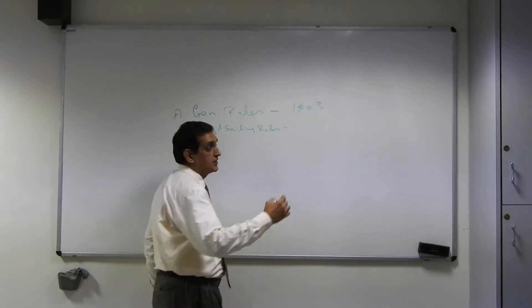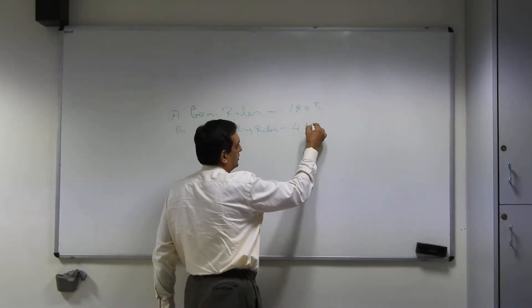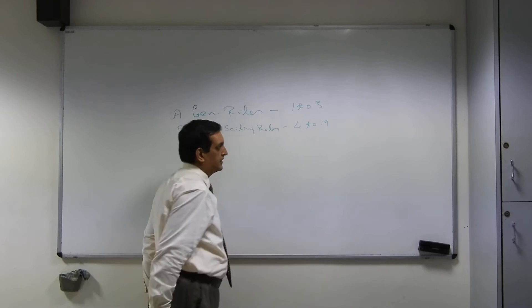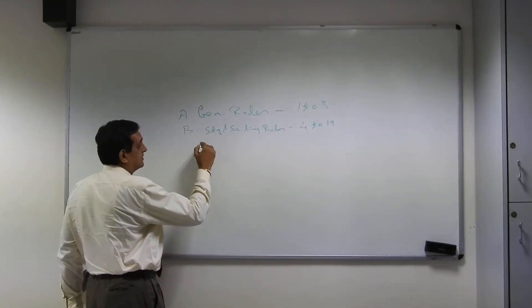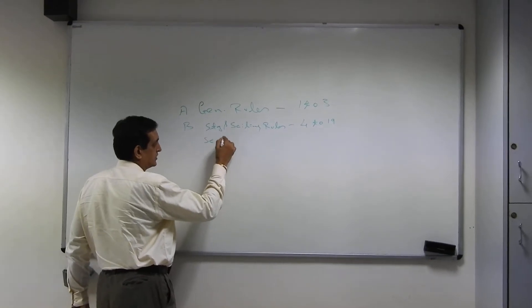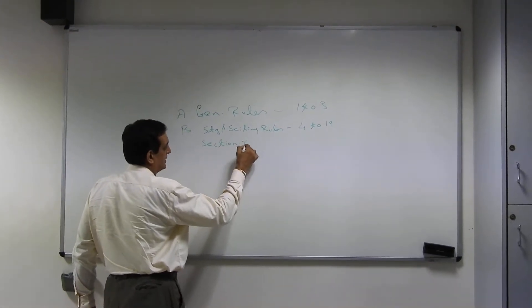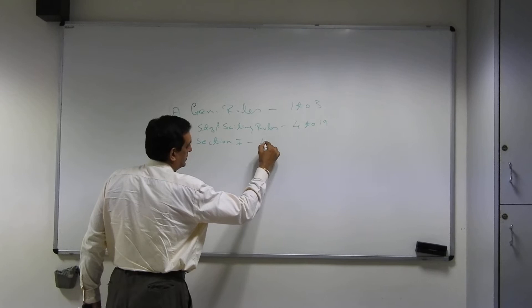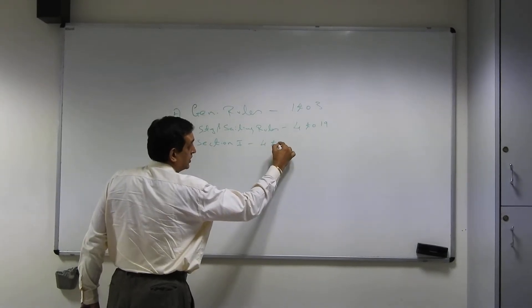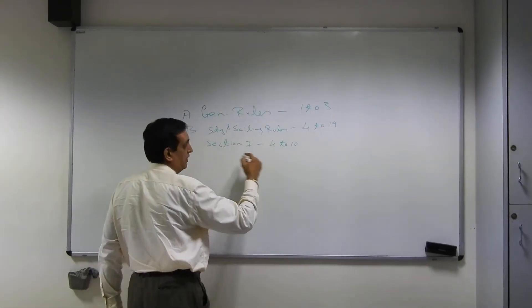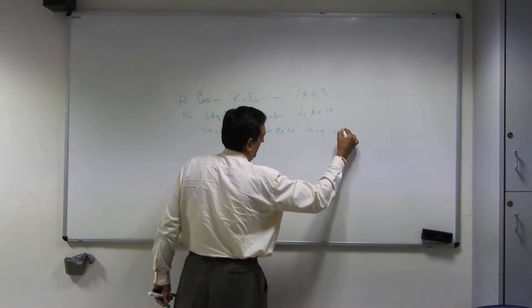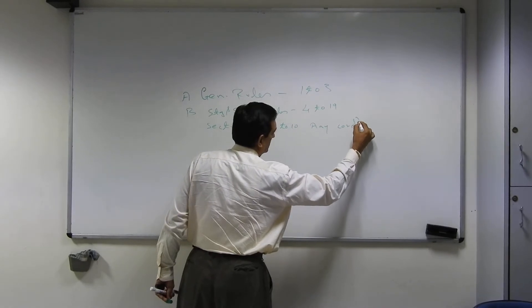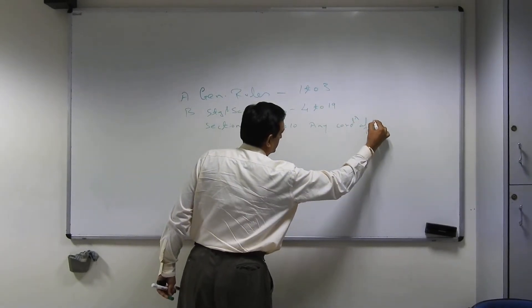This is rules 4 to 19 and these are further divided into 3 parts. We have Section 1 that deals with 4 to 10 and what we call them applicable in any condition of visibility.